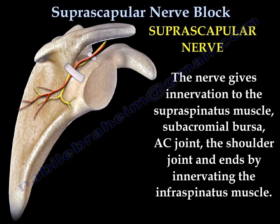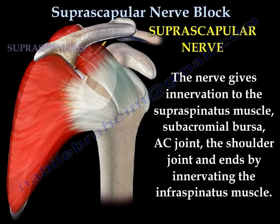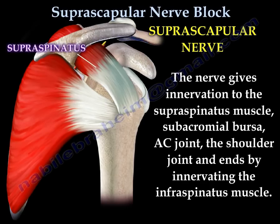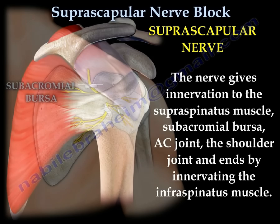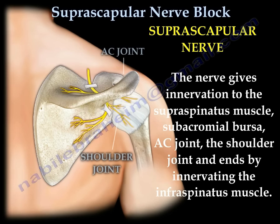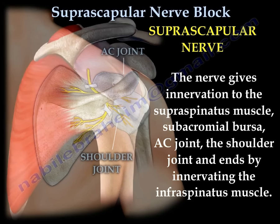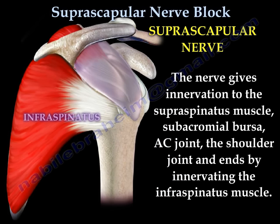The nerve gives innervation to the supraspinatus muscle, the subacromial bursa, the AC joint, the shoulder joint, and ends by innervating the infraspinatus muscle.